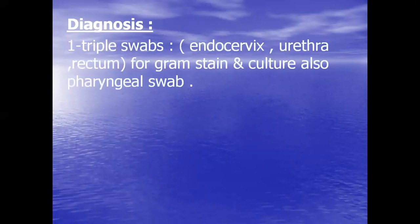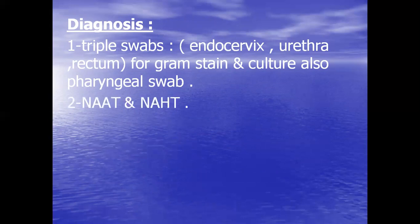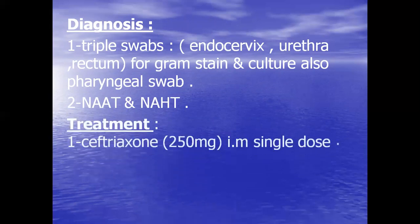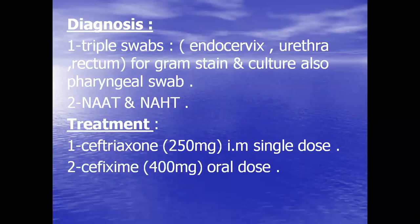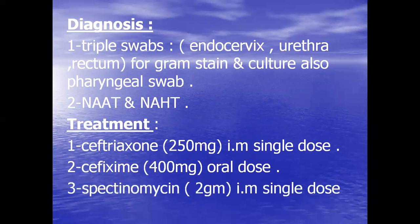Diagnosis of gonorrhea: triple swab from endocervix, urethra, and rectum for gram stain and culture; also pharyngeal swab; and NAAT (nucleic acid amplification technique). Treatment: ceftriaxone 250 mg IM single dose. Alternatives include cefixime 400 mg oral single dose, or spectinomycin 2 g IM single dose.